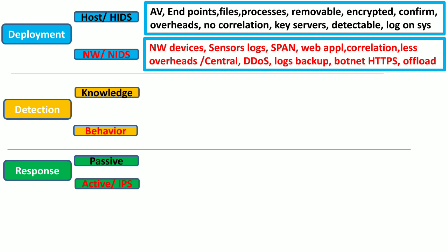Botnet traffic is normally encrypted using HTTP, therefore encrypted traffic is a major issue with network-based IDS because it cannot analyze encrypted traffic. In order to analyze encrypted traffic, the network-based IDS uses a special feature known as SSL offloading or SSL decryption, but this feature is very costly and there are certain overheads involved.